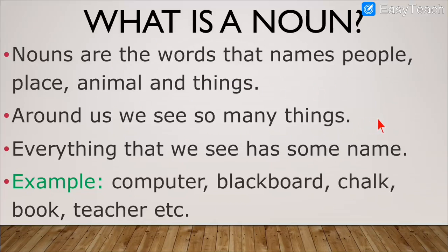Around us we see so many things. Examples I had given: we see blackboard, chalk, teacher, computer, cupboard. All these things are called nouns. Everything that we see has some name. You take something for writing — that is called pencil. You take something for erasing — that is called eraser. Without names, we cannot speak anything. Computer, blackboard, chalk, book, teacher — all these are examples of nouns.